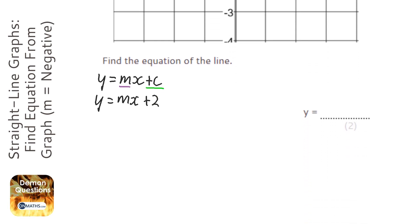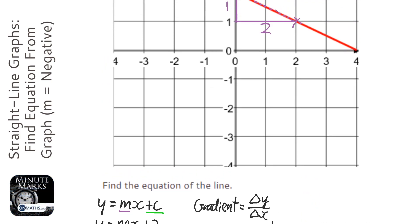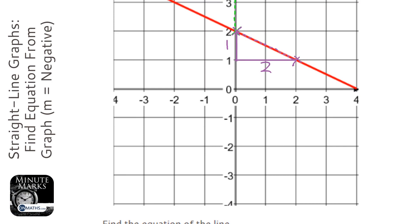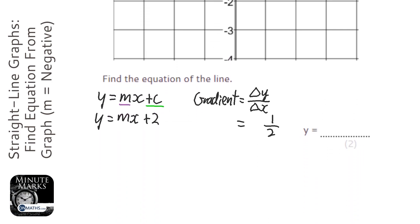We know that it's going to be down one, across two. Now the gradient formula is the change in y over change in x. The y has changed 1 and the x has changed 2, because we went down one and across two. However, looking at that line it is going down so the gradient must be negative.